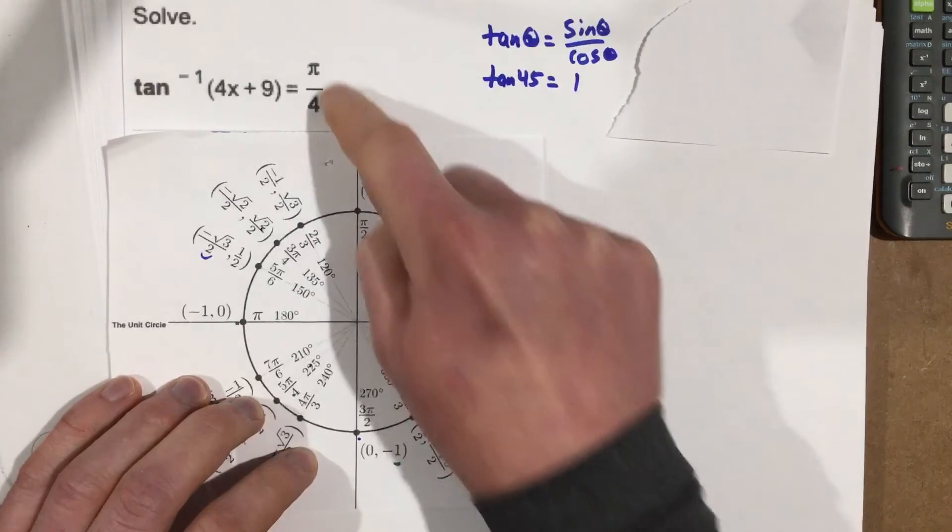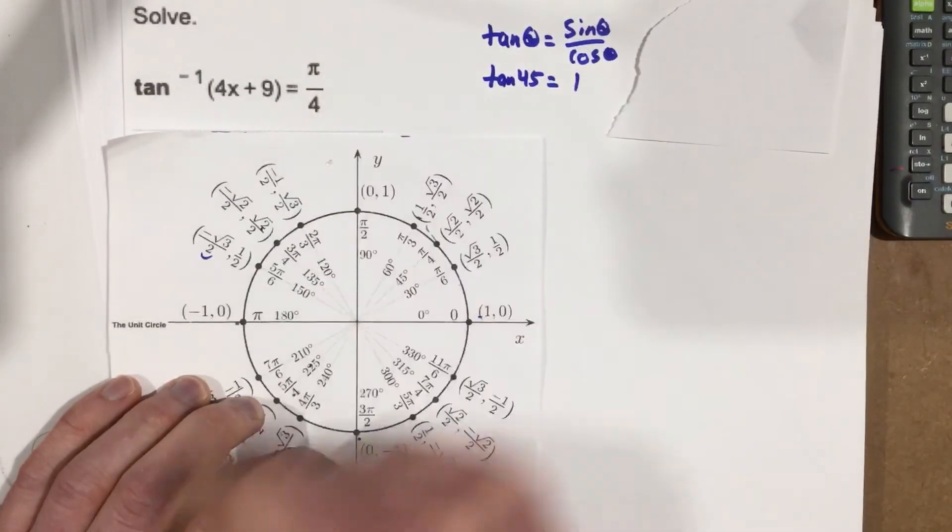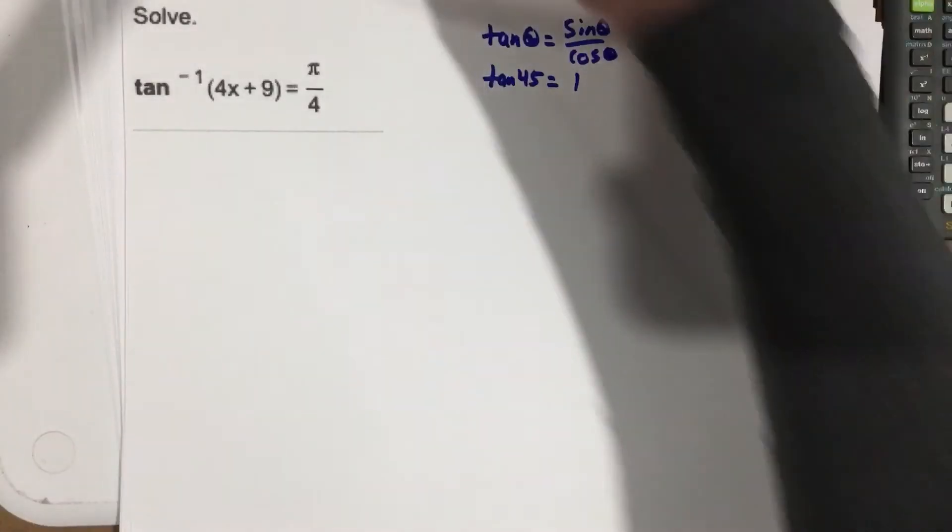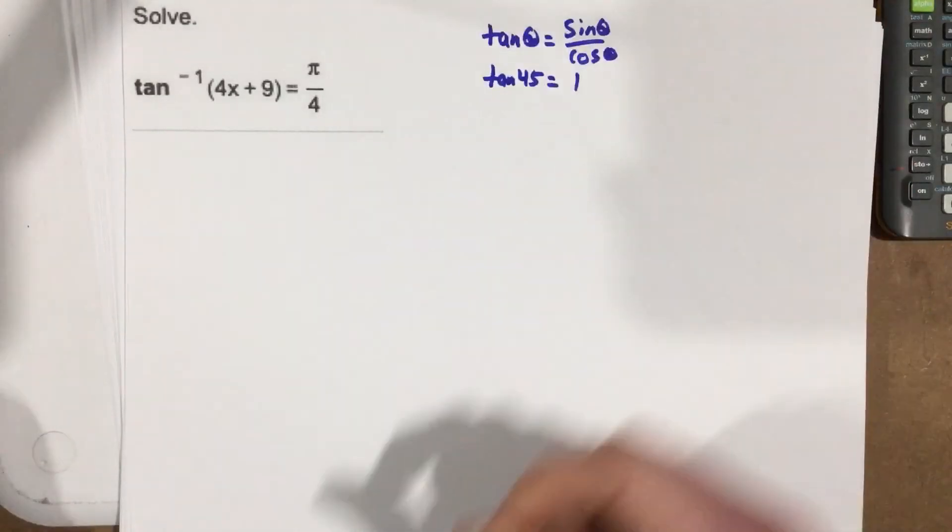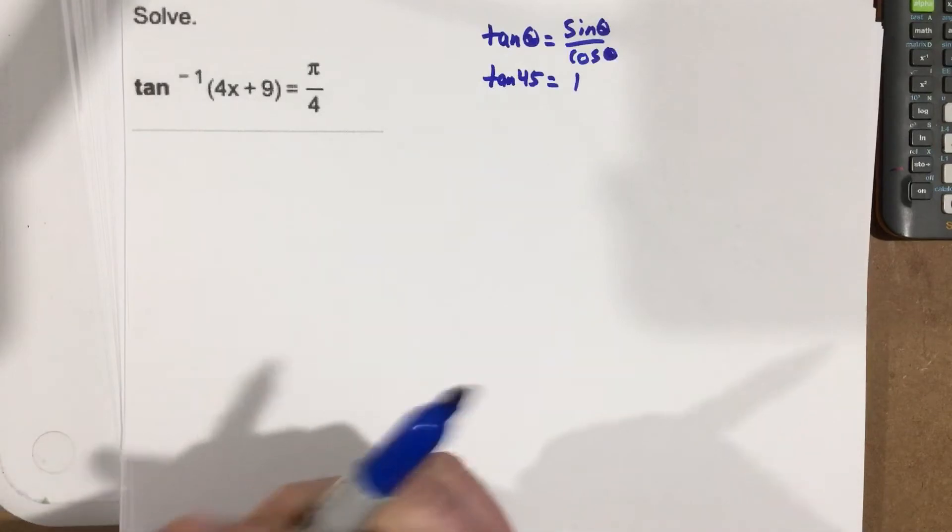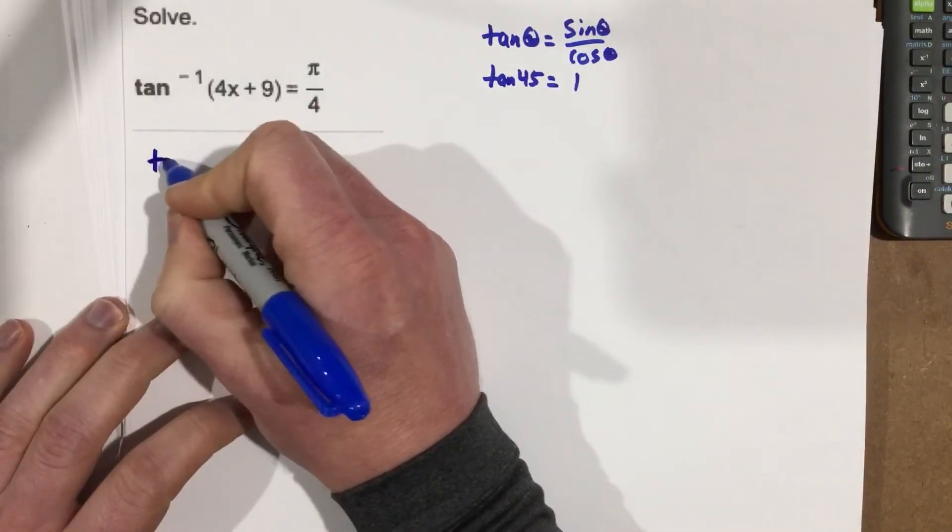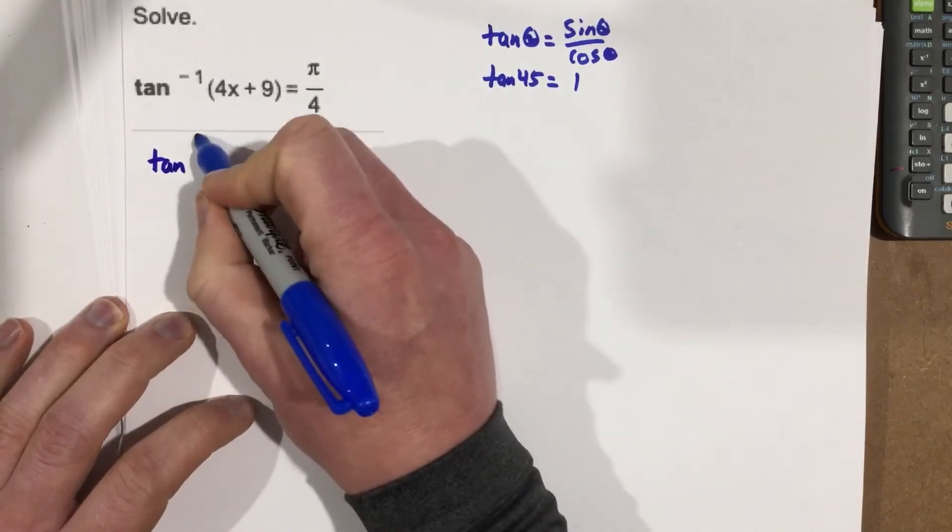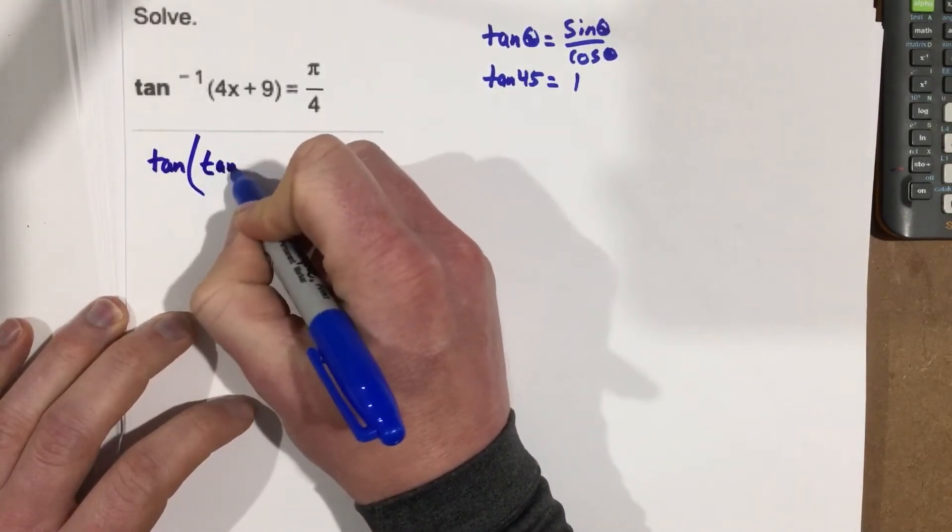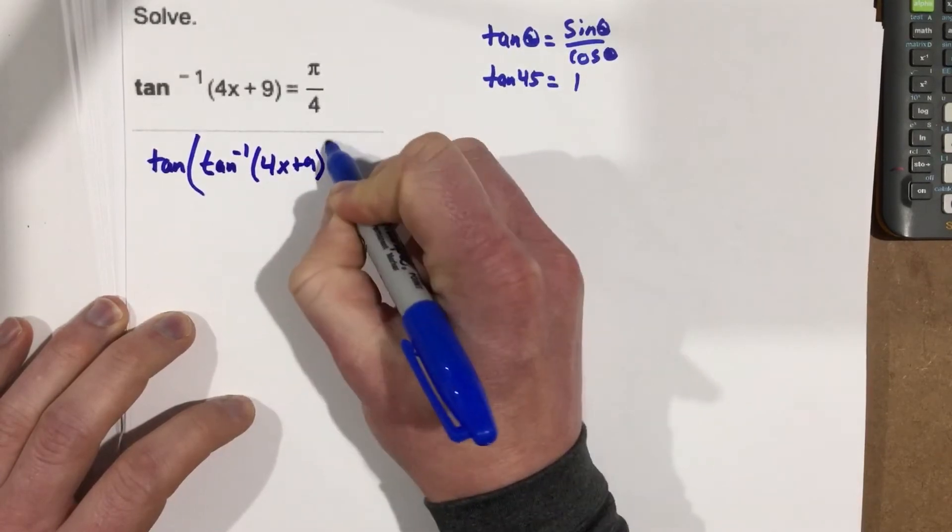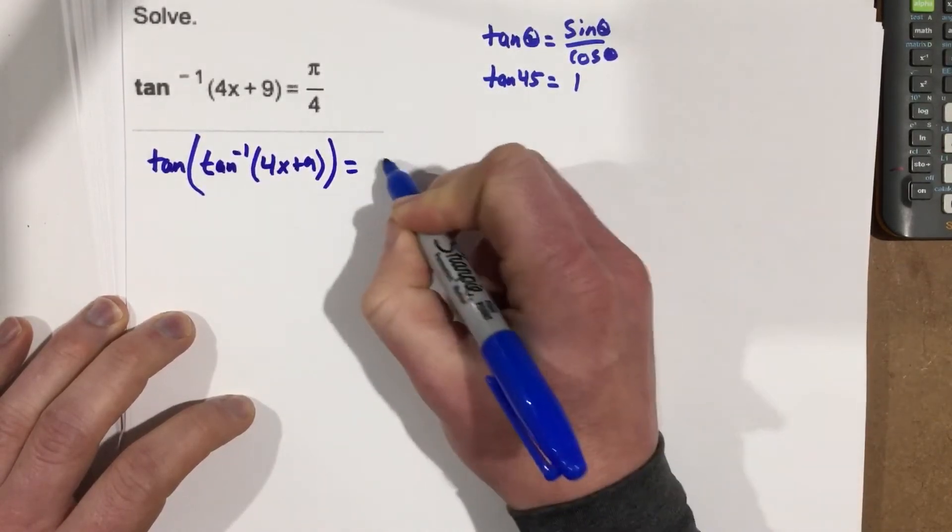So that got me thinking, okay, is there a way to get tan of pi over 4? Well, I know tan inverse and tangent are inverses of each other. So if I take the tangent of the left side, I have to take the tangent of the right side.